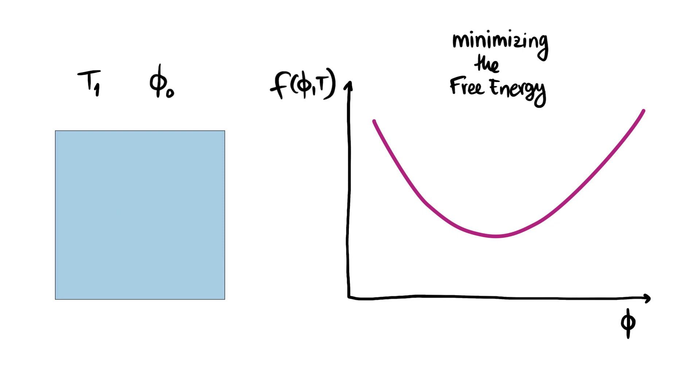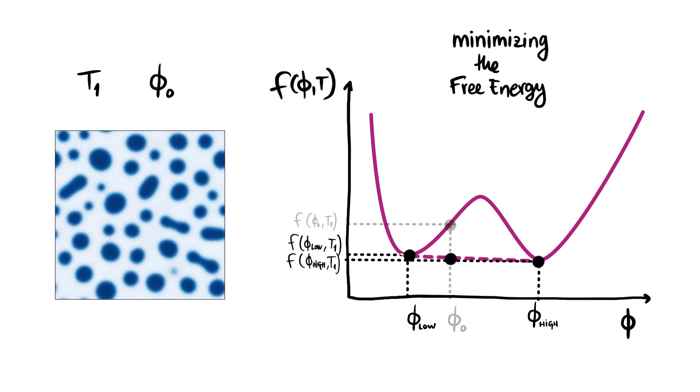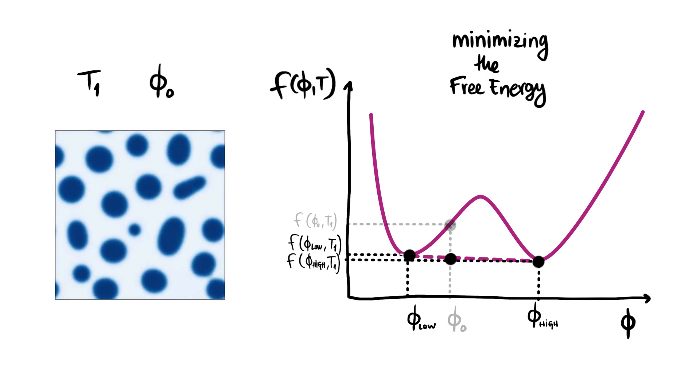Now let's change the temperature while keeping the average concentration. Under these new conditions the free energy density landscape changes. Now the free energy can be minimized by generating two regions with different concentrations. So the homogeneous state is unstable and the system demixes into two phases with higher and lower concentrations.